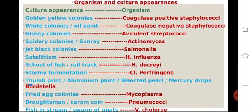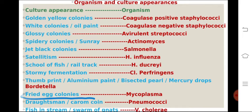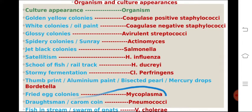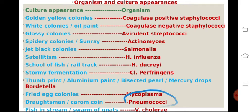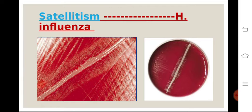Bordetella shows many different appearances: thumbprint appearance, aluminium paint, bisected pearl, and mercury drop — all of them belong to Bordetella. Fried egg colony appearance is typical of Mycoplasma. Draughtsman or carom coin colonies — where you see coin-like structures on the culture media — are typical of Neisseria. Fish in stream is, as already mentioned, for Vibrio cholerae. Now we will simplify these by building a picture memory of them.